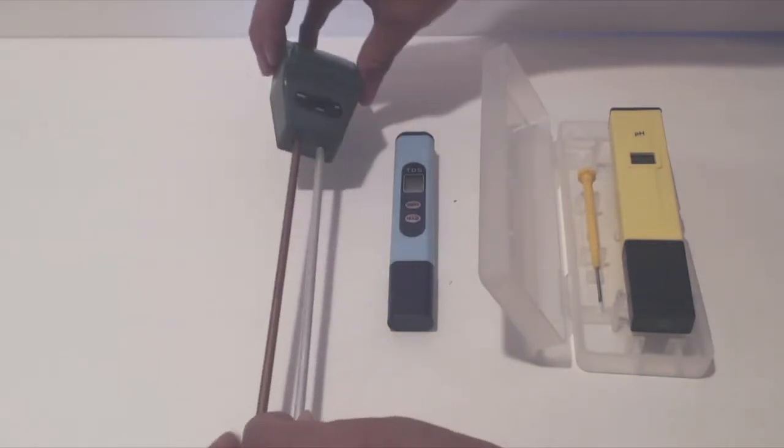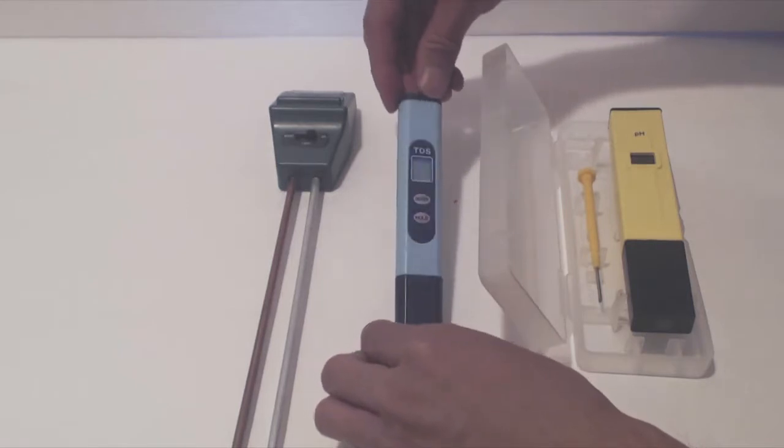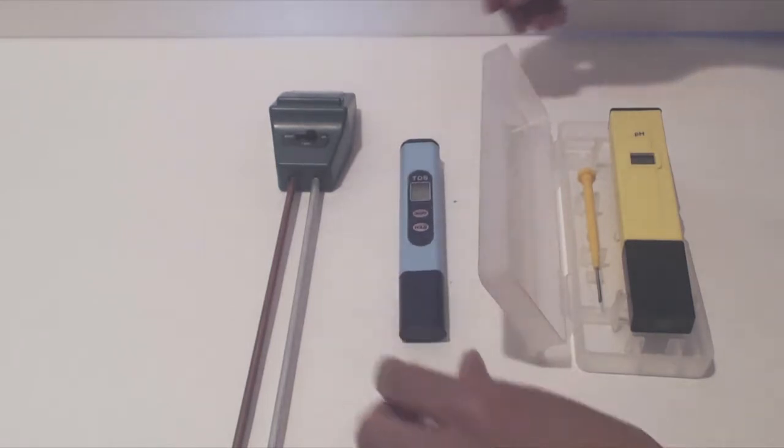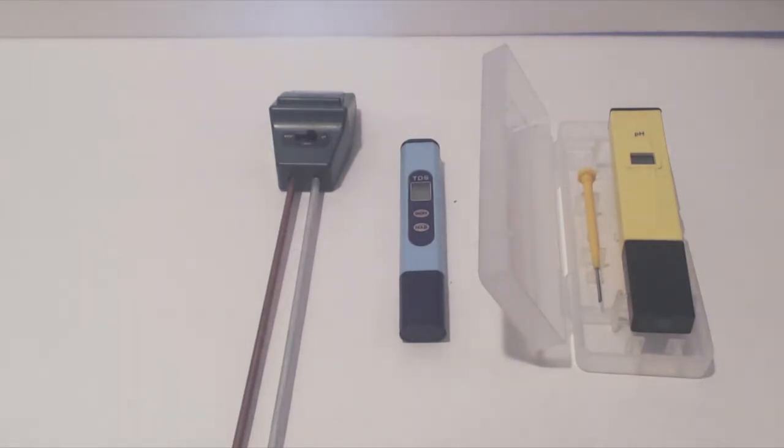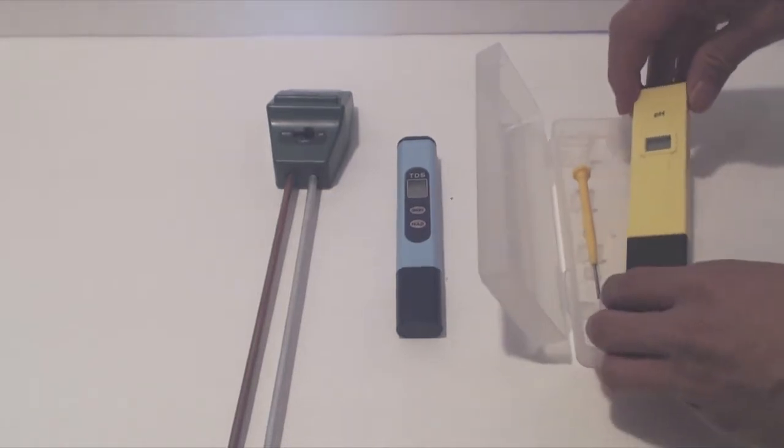This is a 3-in-1 moisture, pH, and light meter that is meant to be used in soil. This is a total dissolved solids or TDS meter, which measures the total amount of mobile charged ions, including minerals, salts, or metals dissolved in your water to monitor nutrient levels. And this is a separate digital pH meter for measuring the pH in a liquid solution.